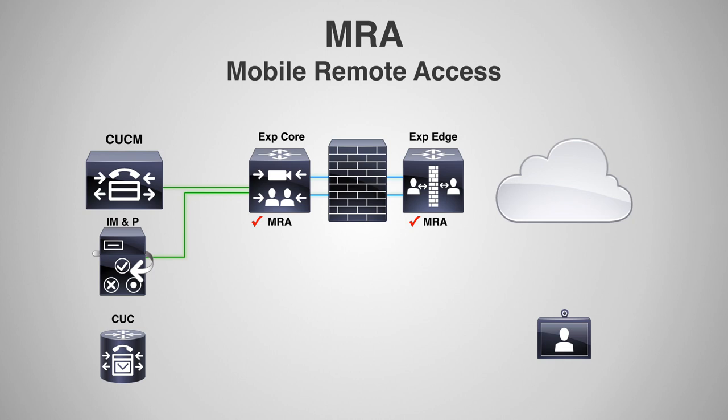However, if you have CUC — Cisco Unity Connection for voicemail — it won't set up neighbor zones there. The neighbor zones only go to the CCM and the IM and Presence server. CUC is controlled by the CCM and all CCM media will go through the CCM. However, by setting up a Unity Connection in an Expressway Core with MRA, it allows voicemail traffic to go through this traversal solution as well.